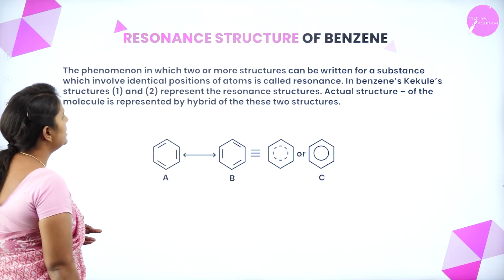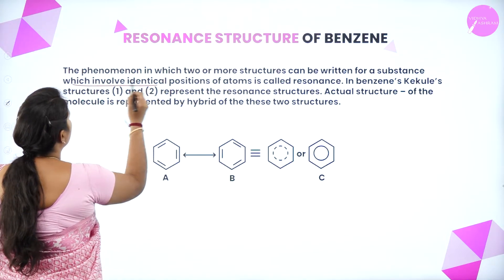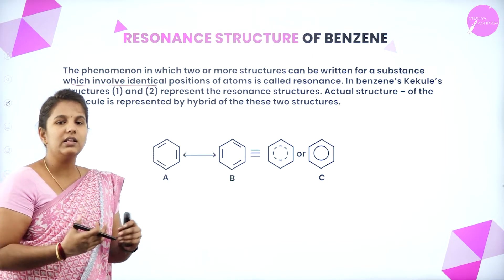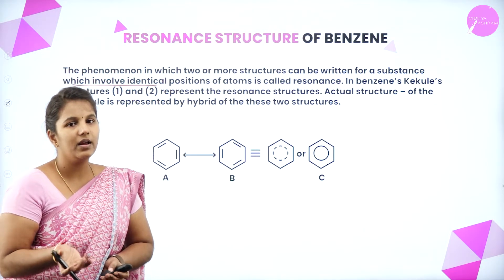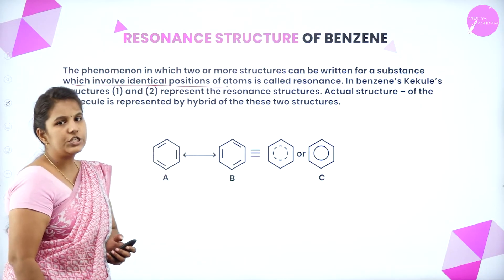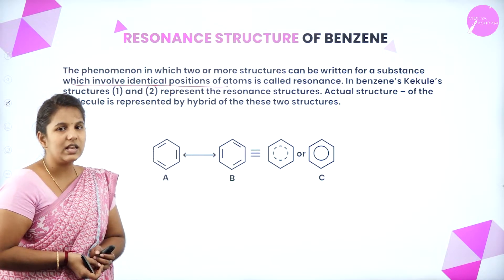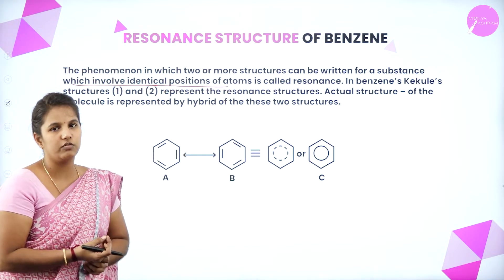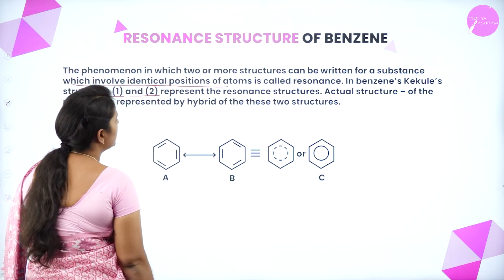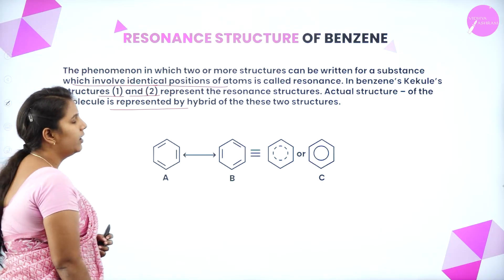Resonance is a phenomenon in which two or more structures can be written for a substance involving the identical positions of atoms. If you take any one structure, you can write it in two or more forms — that is the resonance structure. We write resonance structures to understand the position of atoms in the compound. In benzene, Kekulé suggested that structures 1 and 2 represent resonance structures, and the actual structure is represented by the hybrid of these two.